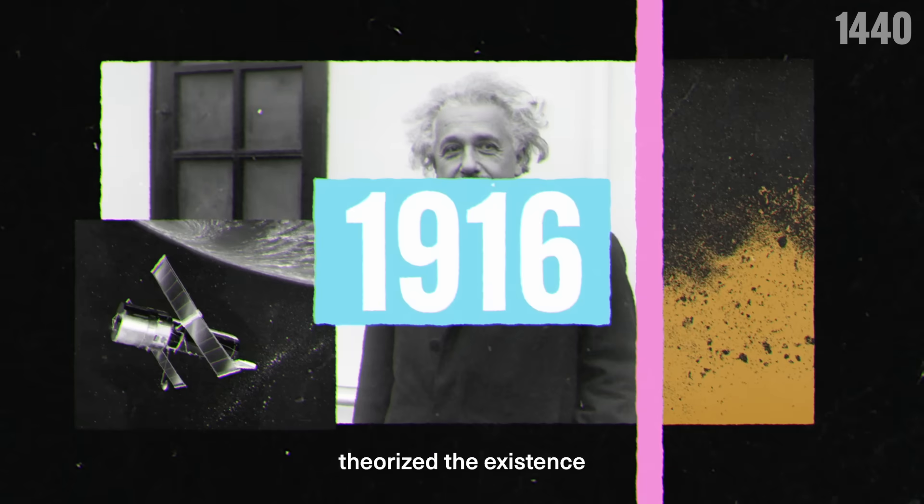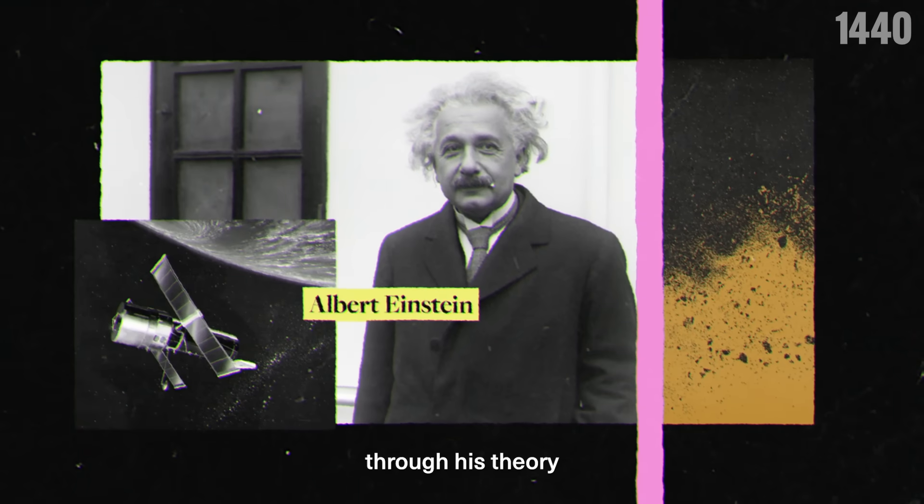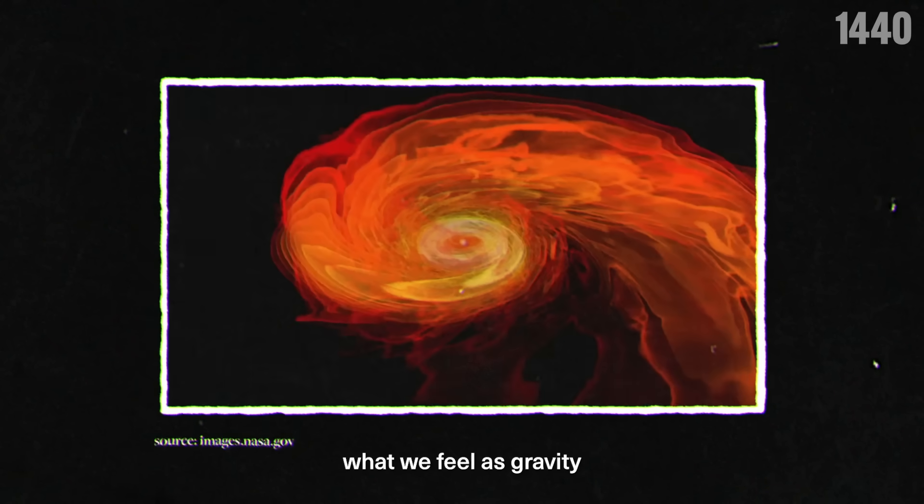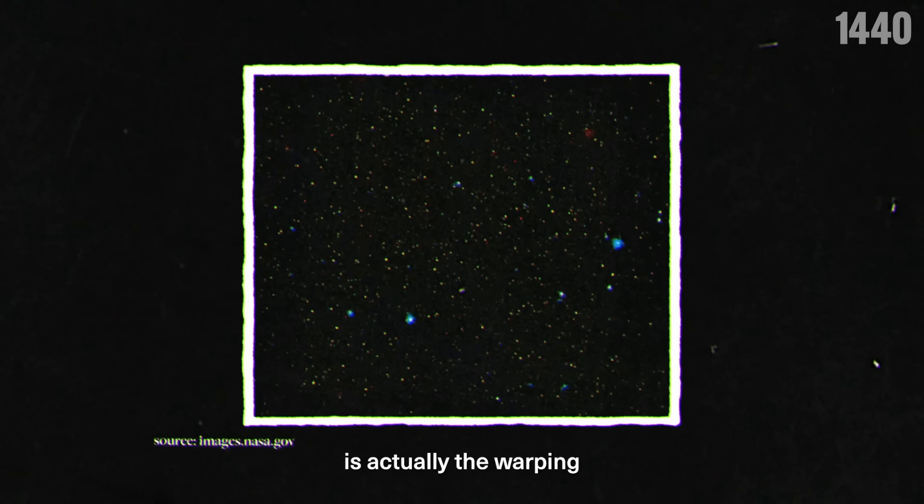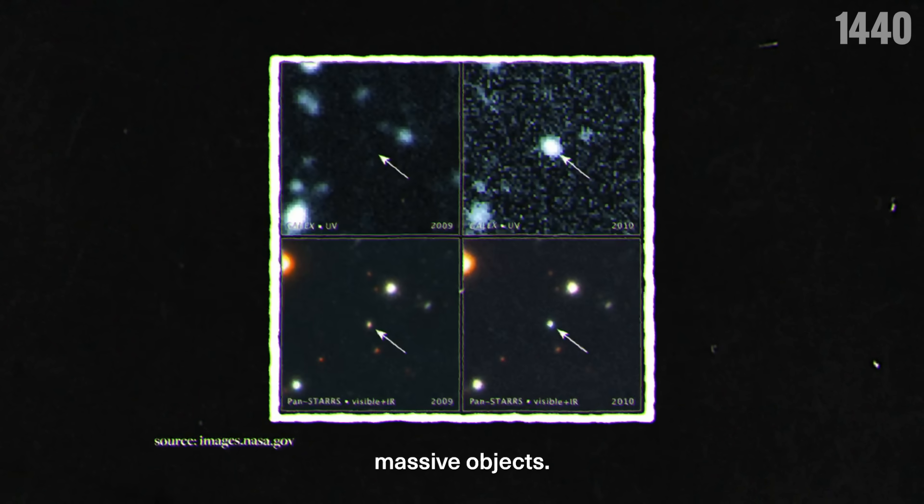In 1916, Albert Einstein theorized the existence of black holes through his theory of general relativity. This theory says that what we feel as gravity is actually the warping of space-time caused by massive objects.